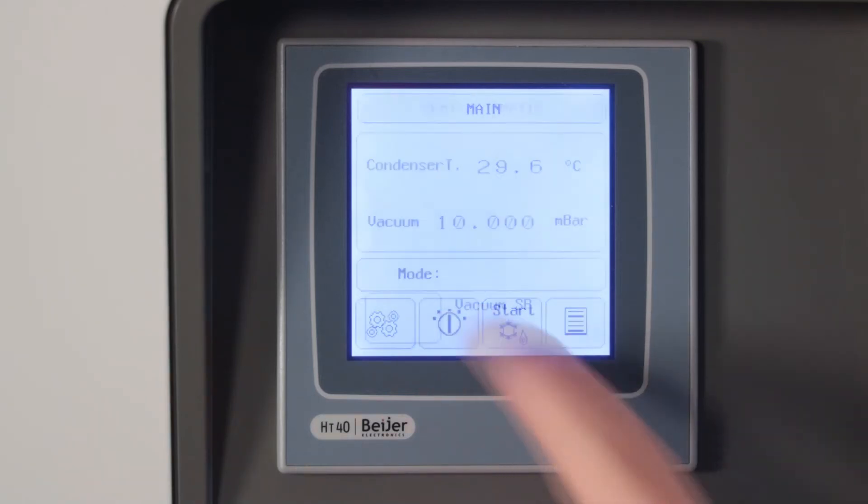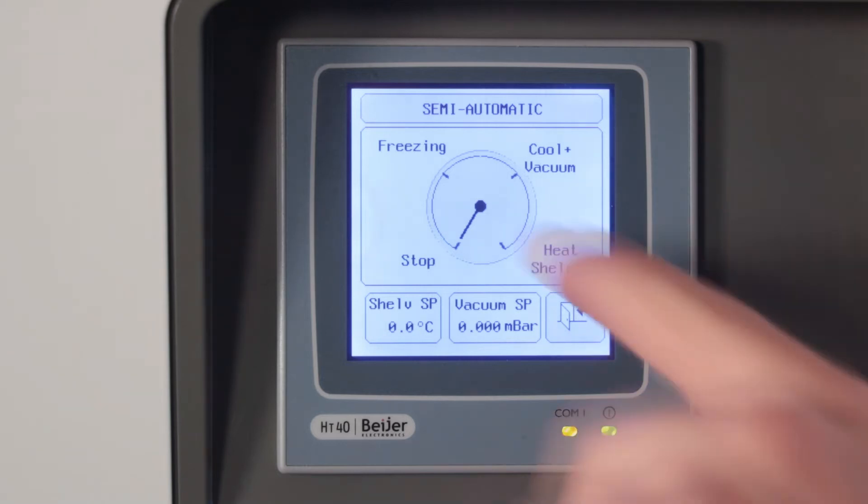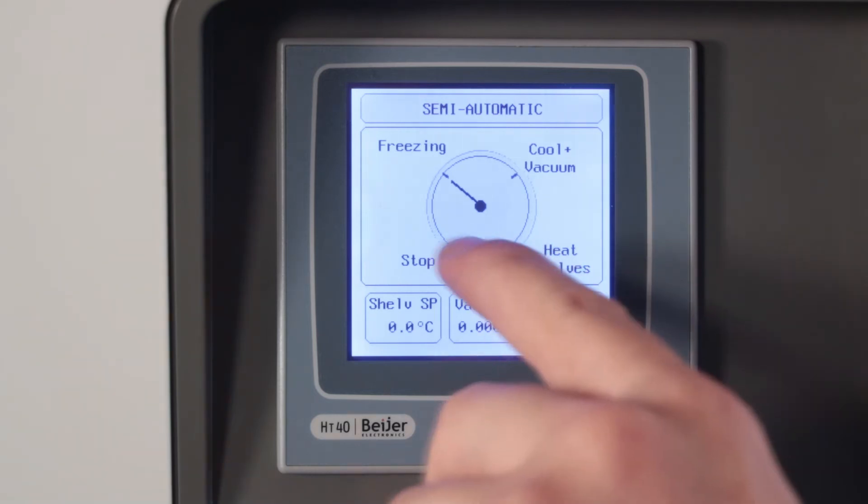This is the semi-automatic mode where you can select the process you want: stop, freezing, cool vacuum, heat shelves. Press this button to start or to stop.